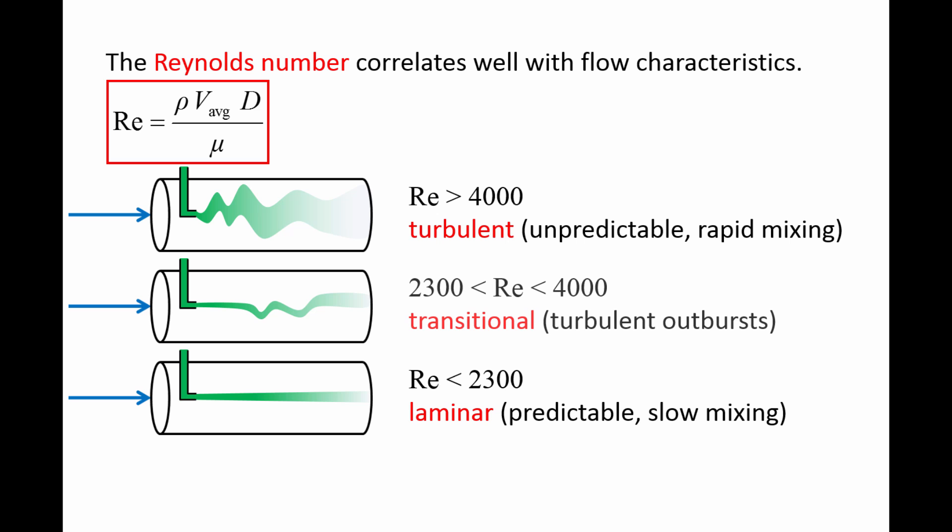The middle pipe shows typical behavior of flows where the Reynolds number is between 2300 and 4000. We call these types of flows transitional.